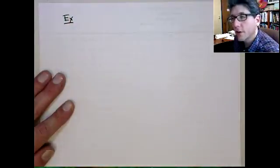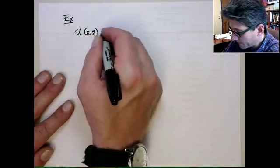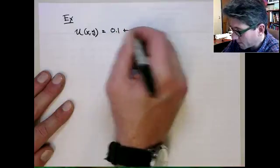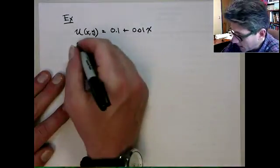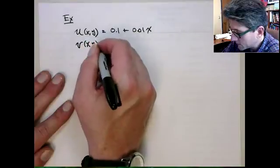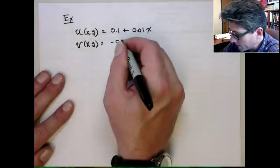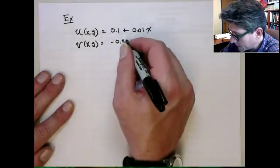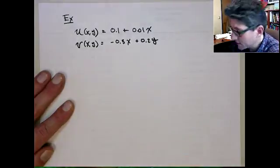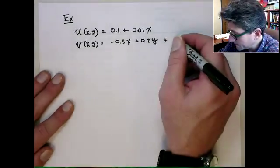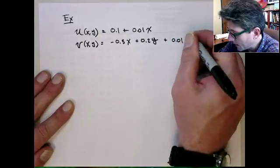Let's say you're given the following deformation. Let's say that u is a function of x and y, and that's 0.1 plus 0.01x. And then the displacement in the y direction is going to be minus 0.3x, plus 0.2y, plus 0.01y squared.